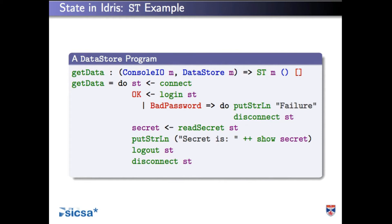What's happening is we connect to some data store. We try to log in — if we fail with a bad password, we print a message and disconnect from the store. If we succeed, we read the secret from the store, print it out, log out, and disconnect. All of these steps have to happen: after connecting, if logging fails I have to disconnect or it won't type-check; once I've logged in, I have to log out or it won't type-check; and I have to disconnect at the end or it won't type-check.